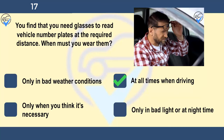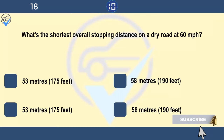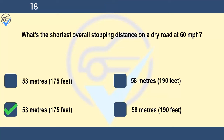What's the shortest overall stopping distance on a dry road at 60 miles per hour? 53 metres (175 feet), 58 metres (190 feet), 73 metres (240 feet), or 96 metres (315 feet). This distance is the equivalent of 18 car lengths. Try pacing out 73 metres and then look back — it's probably further than you think.